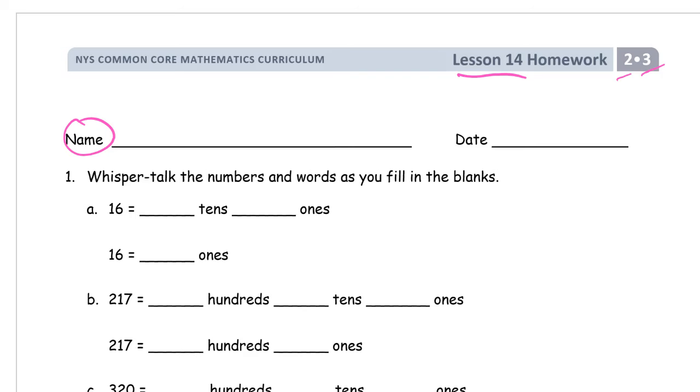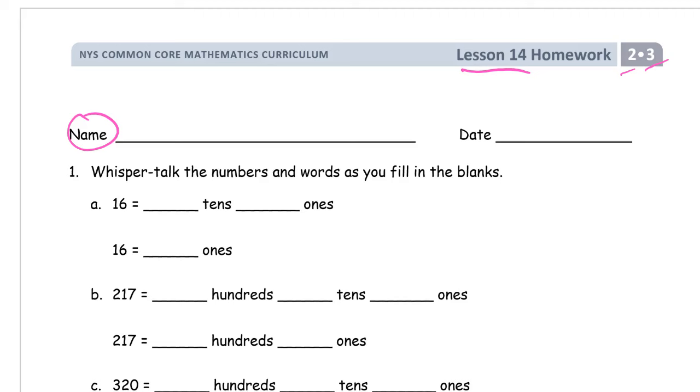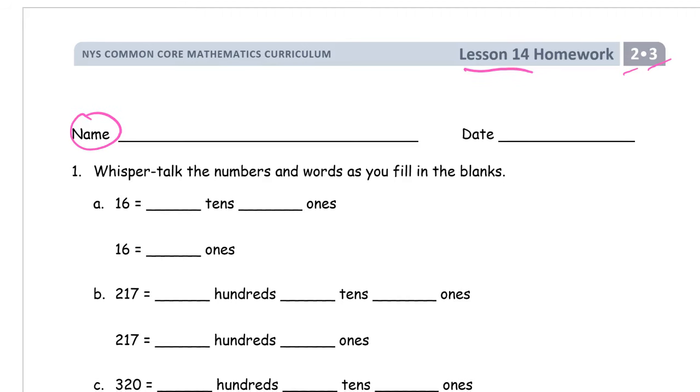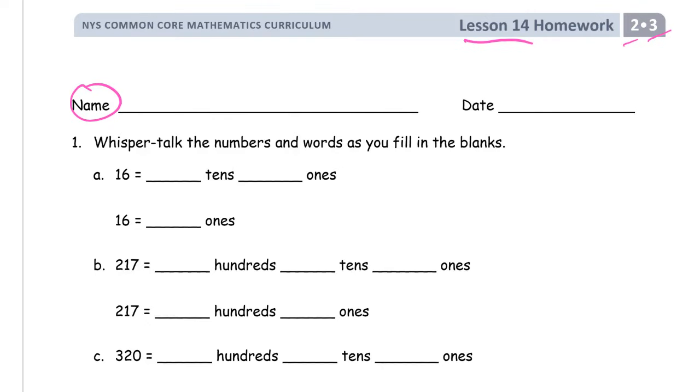And now we're whisper talking the numbers and words as you fill in the blanks. 16 equals one ten six ones. 16 equals 16 ones.